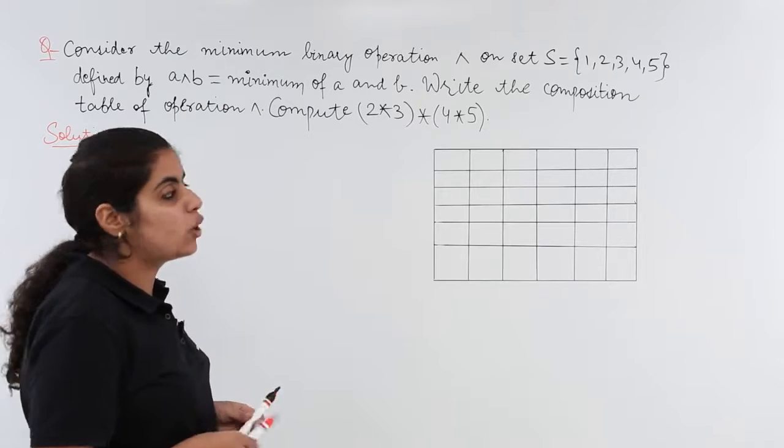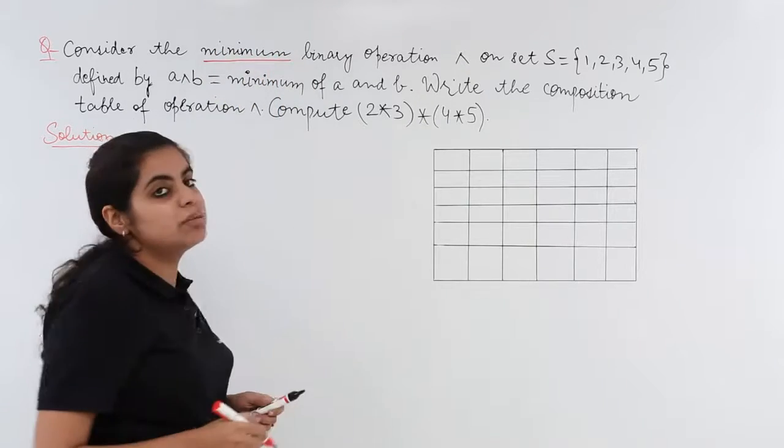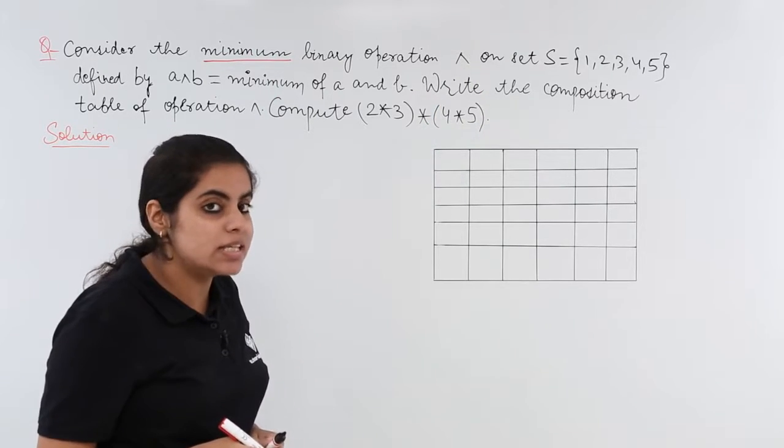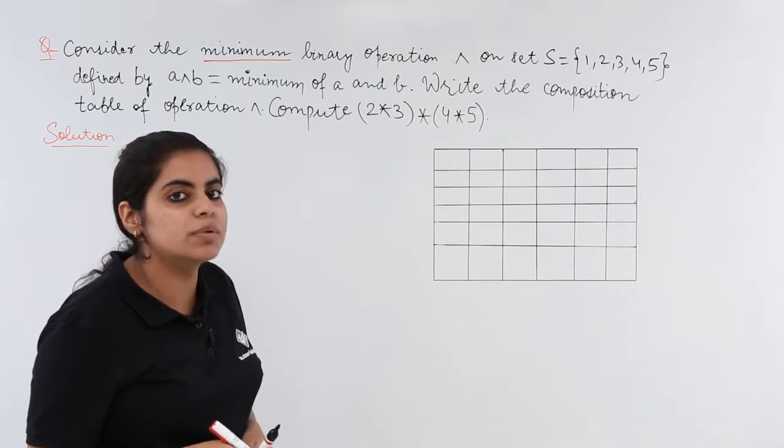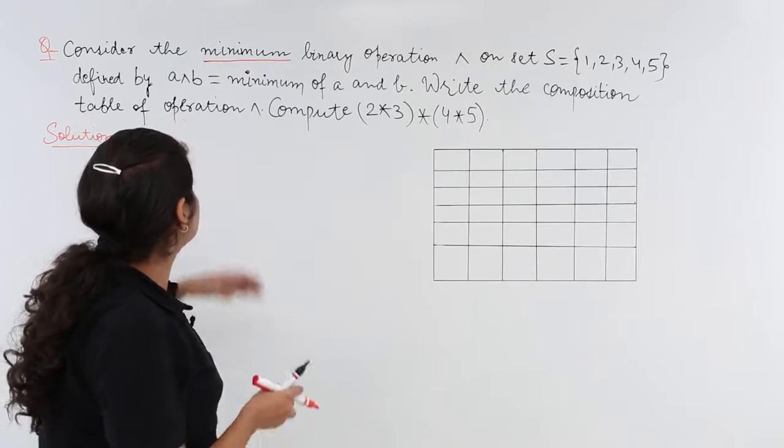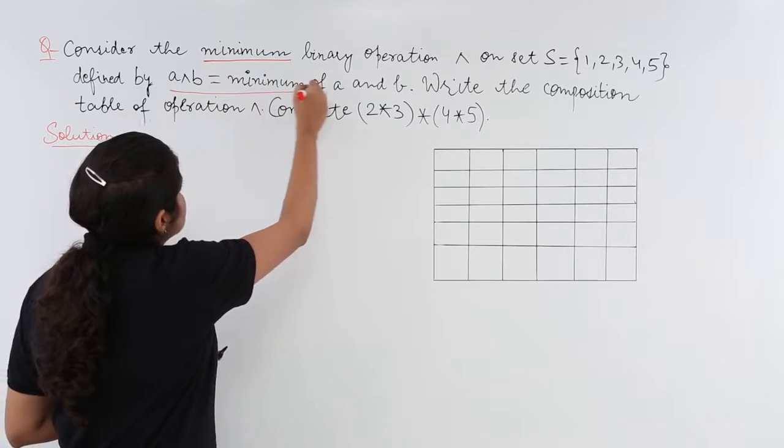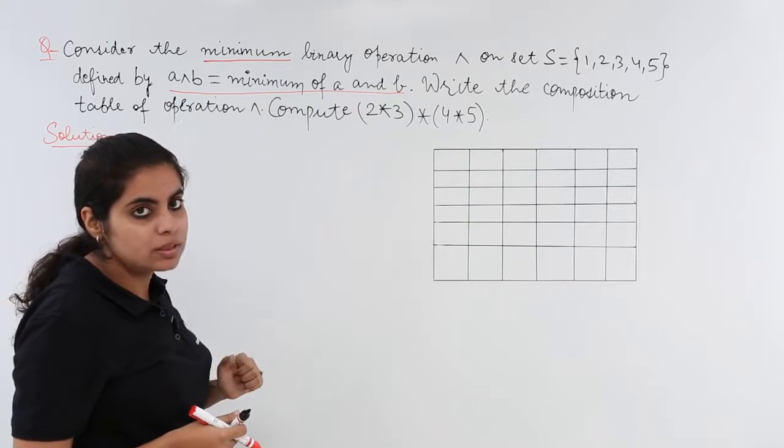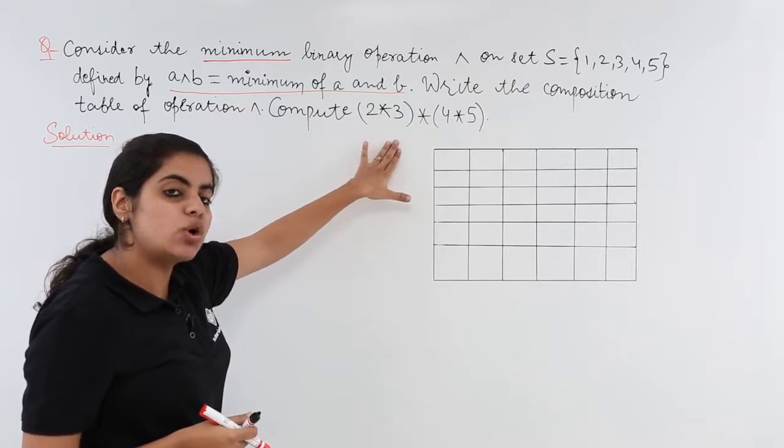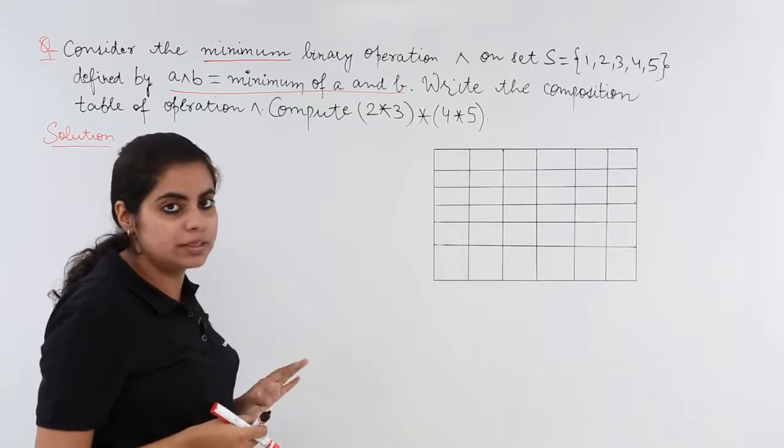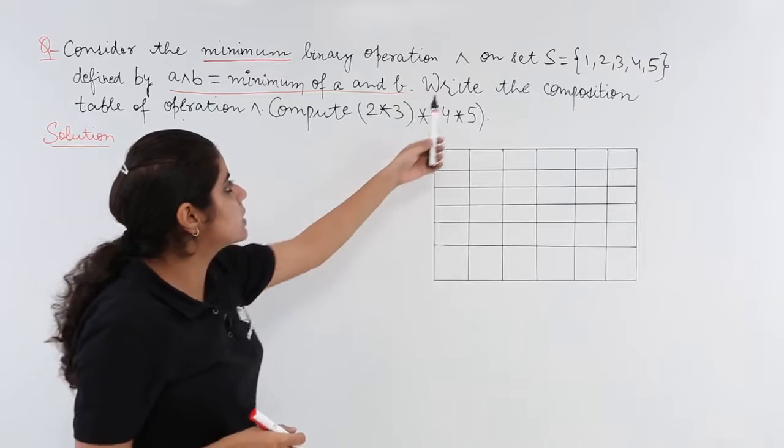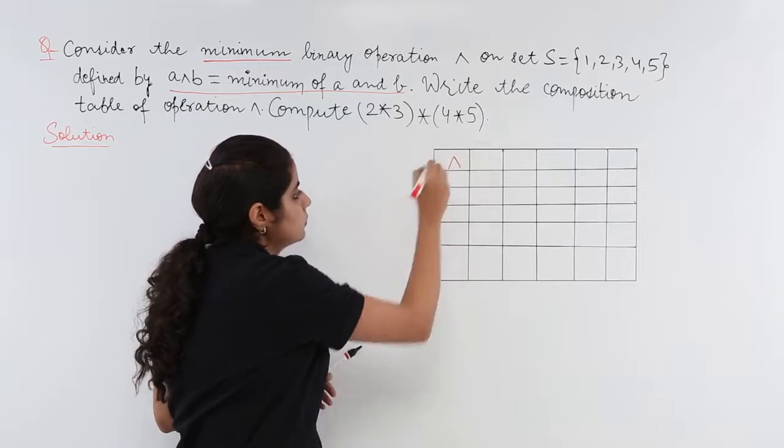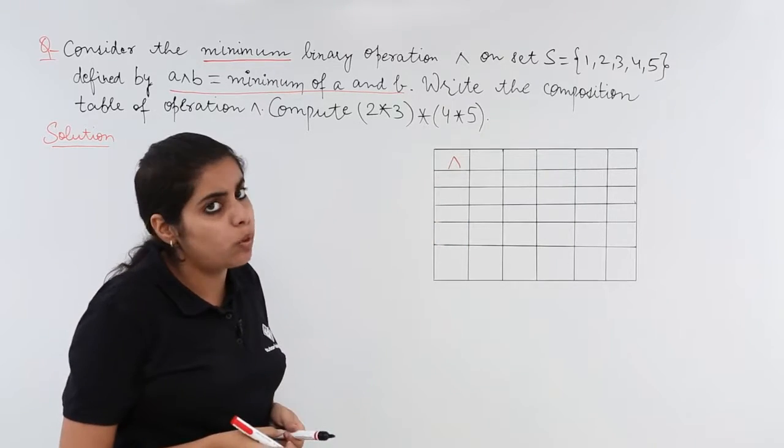Consider the minimum binary operation. The operation given to me is minimum, denoted with this symbol, on the set S which has elements 1, 2, 3, 4, 5. It is defined by A minimum B equals minimum of A and B. Write the composition table of the operation. Let's write the symbol and the elements.